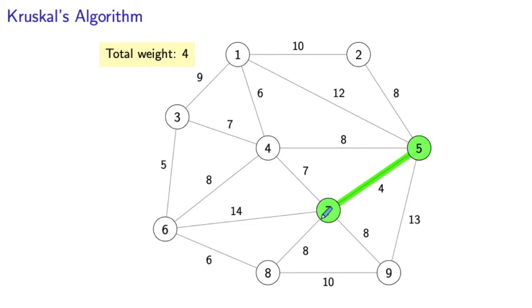Next, we are going to look for the next lightest edge in our graph, and this edge would be three-six of weight five, and clearly it doesn't create any cycles in our graph.